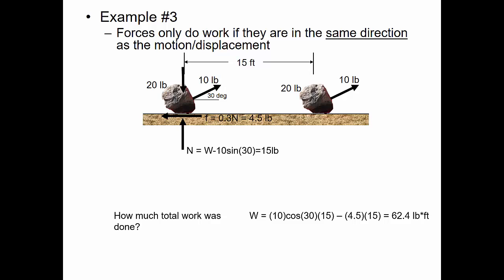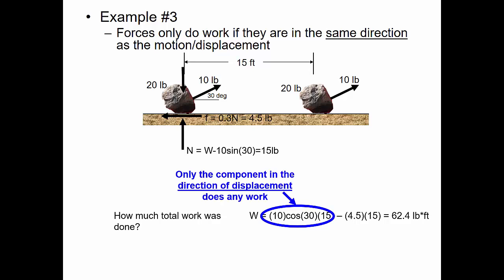Ten cosine of thirty times the fifteen-foot displacement, minus the 4.5-pound friction force times fifteen feet, gives 62.4 pound-feet of total work. Notice that only the component in the direction of displacement does any work, and friction produces negative work because it acts opposite to the direction of displacement.